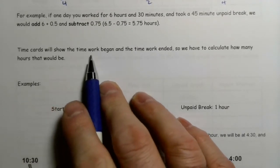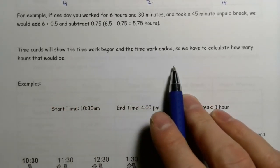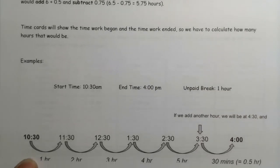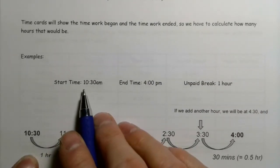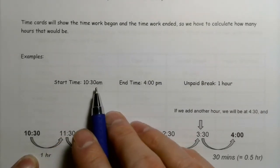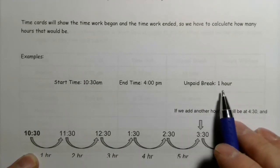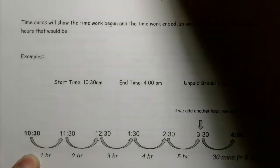Time cards will typically show when the time work began and the time work ended. So let's say you fill in your card here — you're starting at 10:30 and you ended at 4 o'clock and you had a one-hour unpaid break.